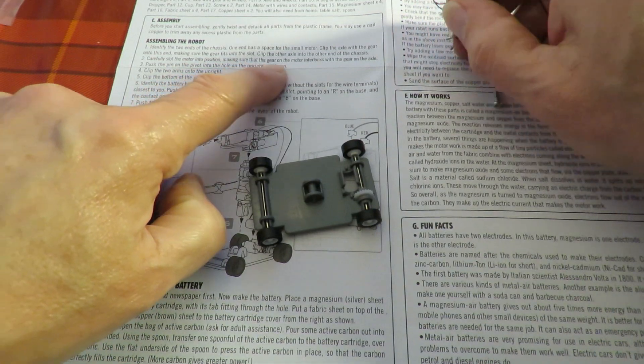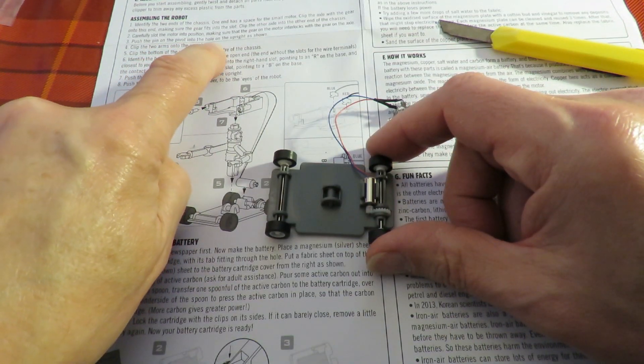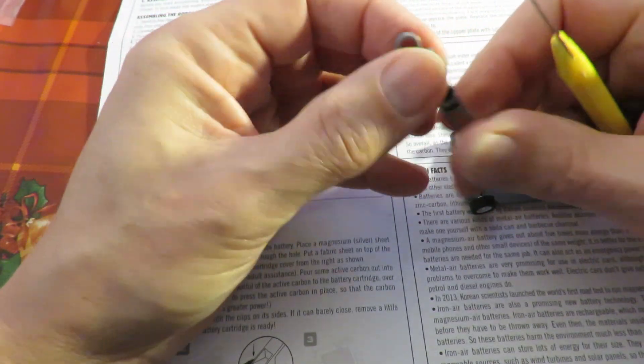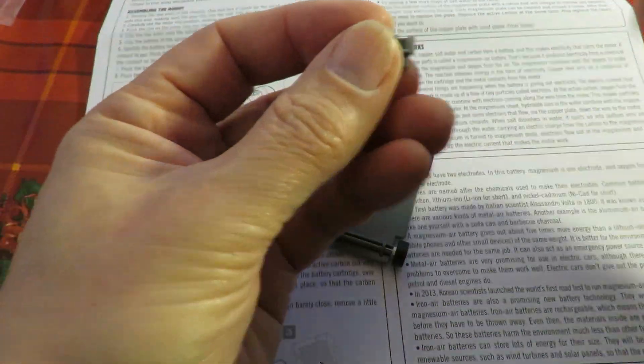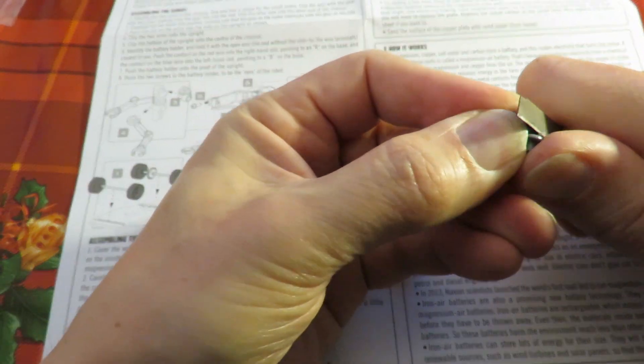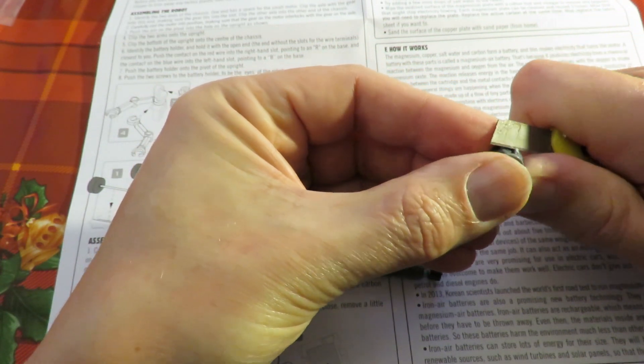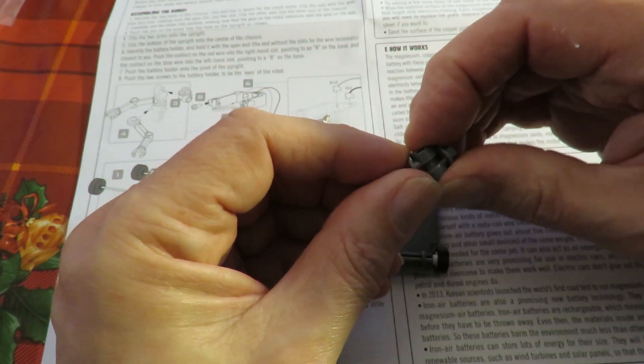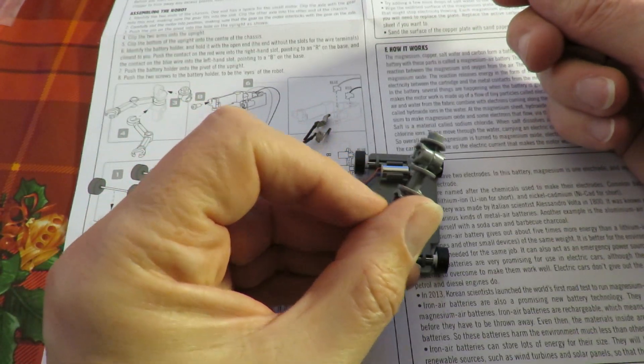Right, carefully slot the motor in position. Make sure the gear on the motor interlocks with the gear on the axle. So we've done that. Push the pin on the pivot into the hole in the upright as shown. Okay. It's this piece. I'm just going to go in there. Okay. I'm sure I'm making harder work of this than I need to.